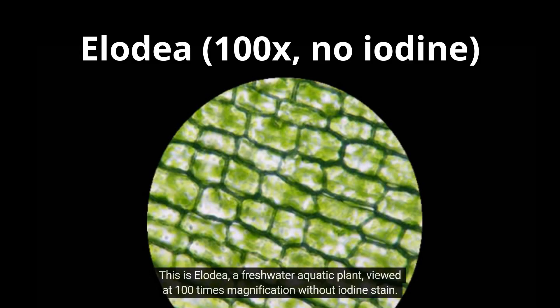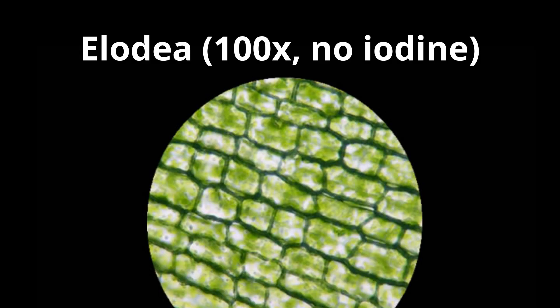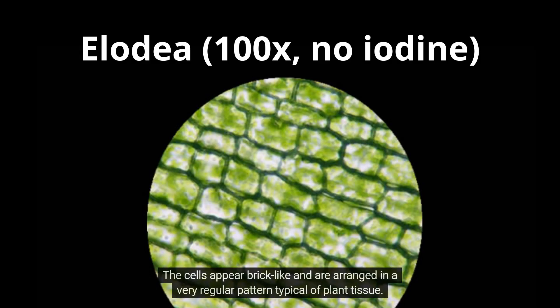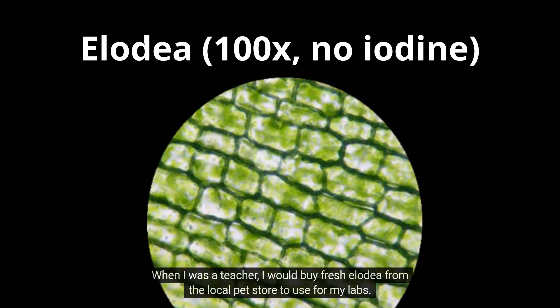This is Elodea, a freshwater aquatic plant viewed at 100 times magnification without iodine stain. Even at this magnification, you can see the green color caused by chloroplasts. These organelles carry out photosynthesis. The cells appear brick-like and are arranged in a very regular pattern typical of plant tissue. You can buy Elodea at any pet store that has fish and fish tank accessories. When I was a teacher, I would buy fresh Elodea from the local pet store to use for my labs.